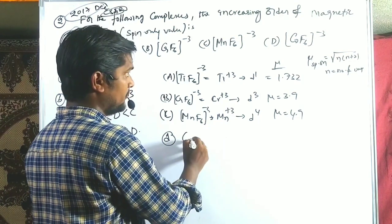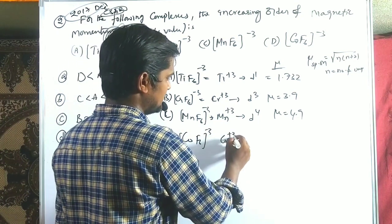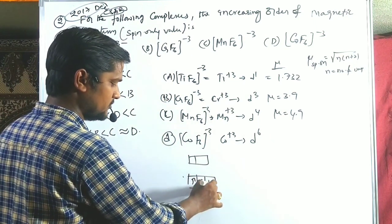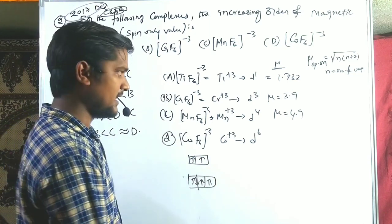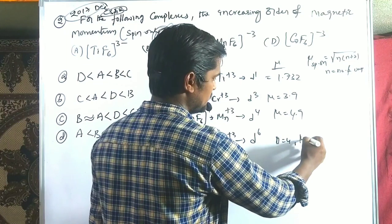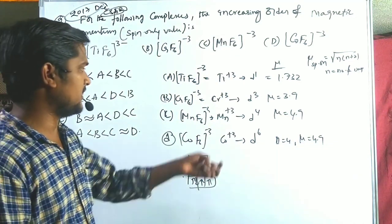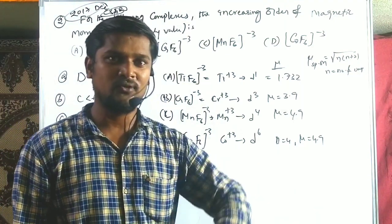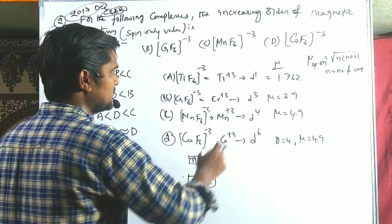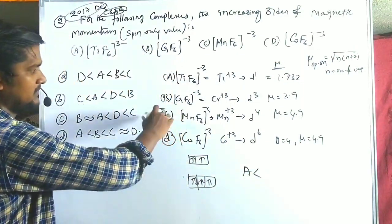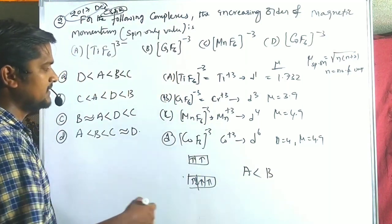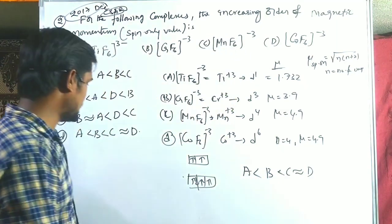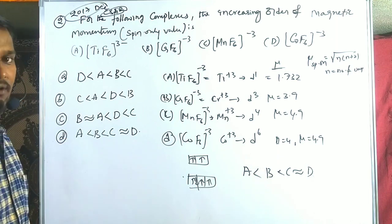Option D is [CoF₆]³⁻, meaning Co³⁺ with d⁶ configuration. Since it is a weak field ligand, the filling gives n = 4 unpaired electrons, so μ = 4.9 BM. In increasing order: A (1.732) < B (3.9) < C = D (4.9). Option D is the correct answer.